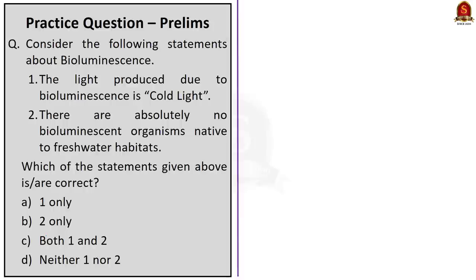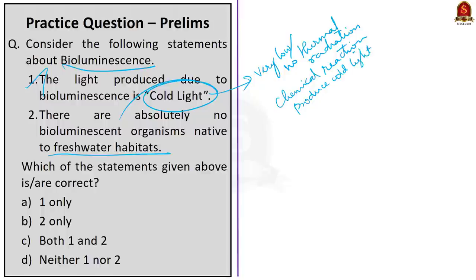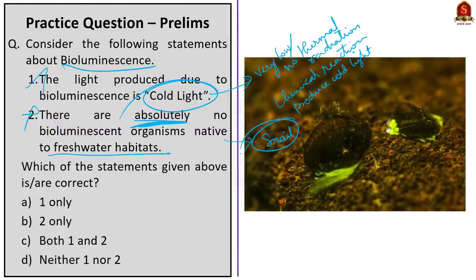The second question is regarding bioluminescence. Statement 1 says the light produced due to bioluminescence is cold light — this is correct, as cold light generates very low or no thermal radiation or heat. Unlike a candle which produces hot light, bioluminescence is produced by a chemical reaction, so the associated thermal radiation is negligible. Statement 2 says there are absolutely no bioluminescent organisms native to freshwater habitats — this is incorrect, as it is an extreme statement. There is actually one bioluminescent organism native to freshwater habitats: a freshwater snail called Latia neritoides. The answer is Statement 1 only.